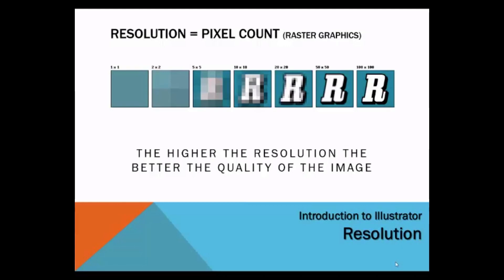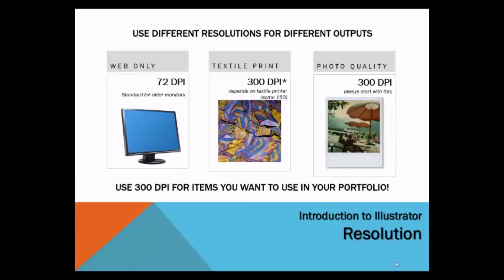Resolution refers to the pixel count used to create an image. When we start files in Photoshop, we need to put in a resolution for the file. The resolution is the DPI or PPI we need to use. For example, if you are making a file to print, you would start your Photoshop file at 300 DPI, because that is the correct print resolution to get a nice quality printout. The higher the resolution, the better the quality of the image. You always want to start files at 300 DPI in Photoshop if you want to print it out.